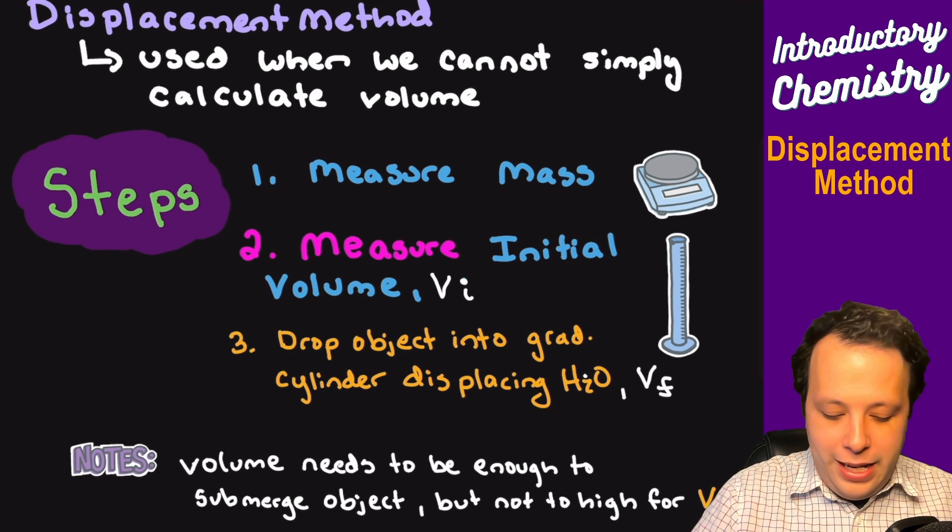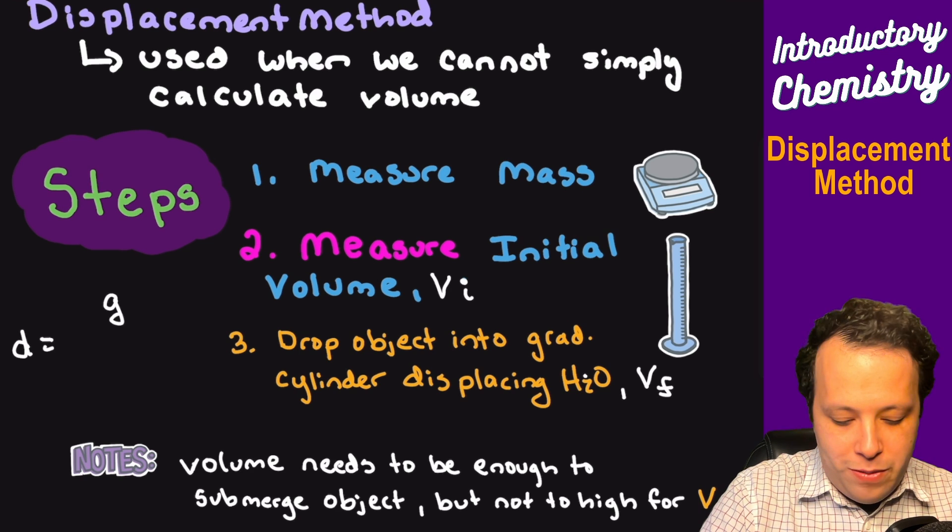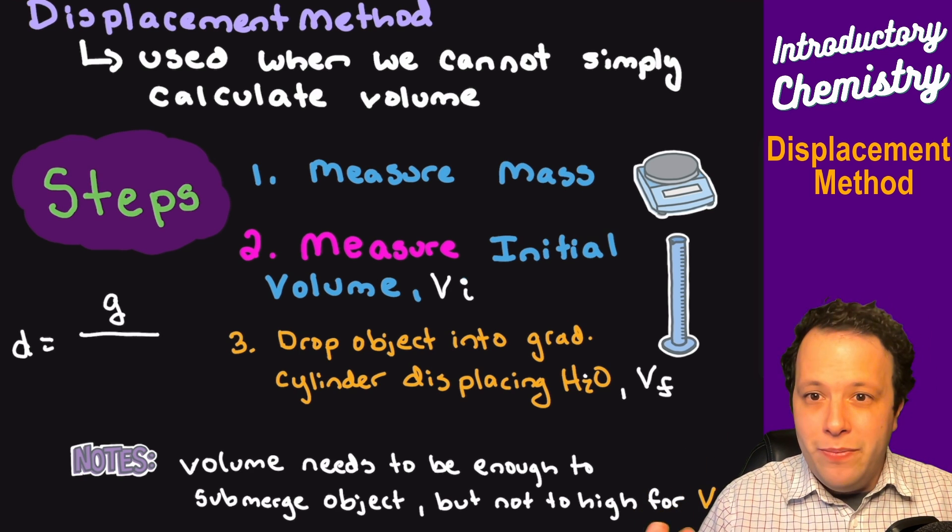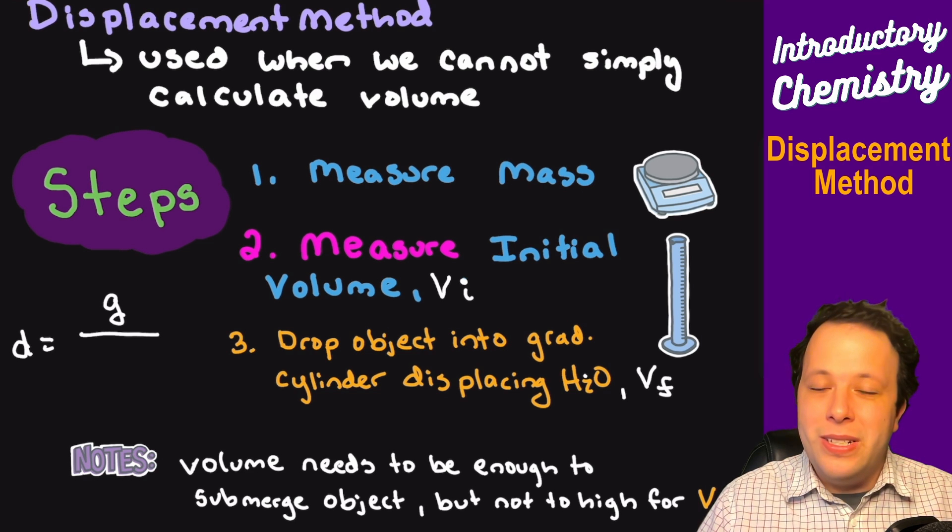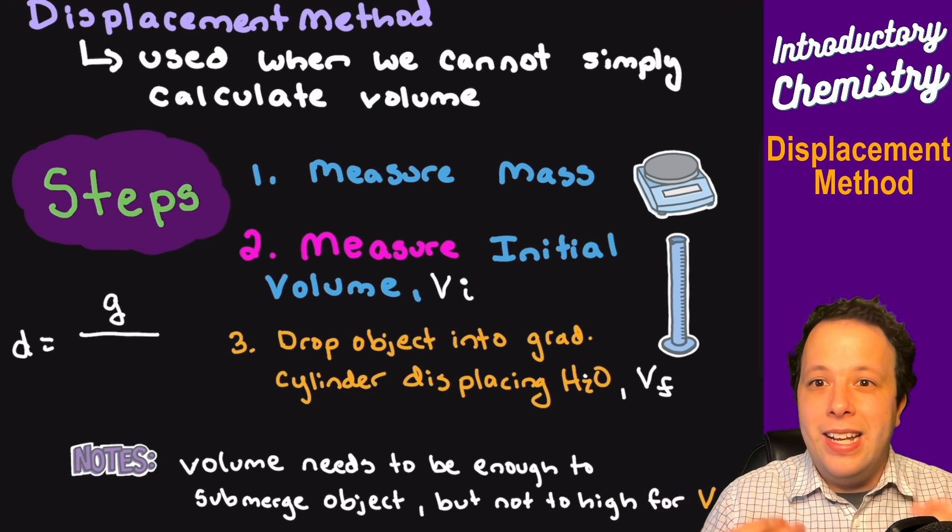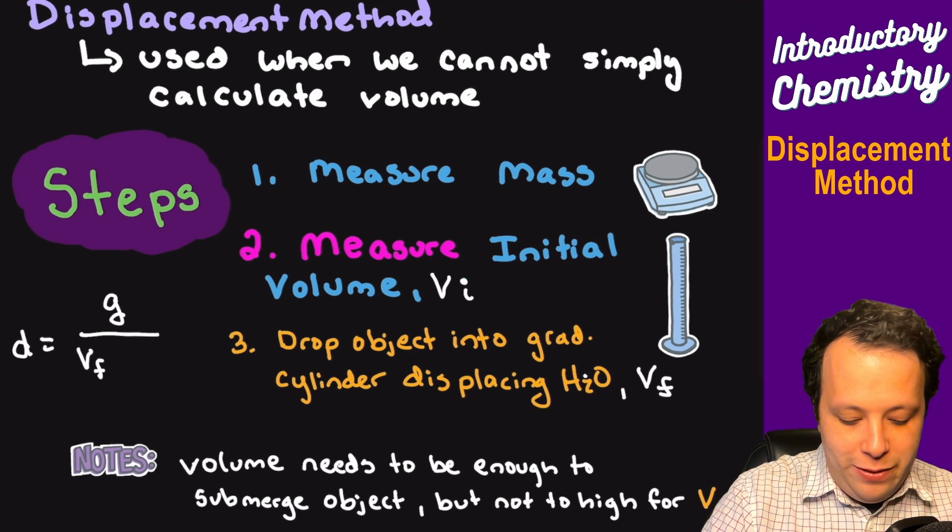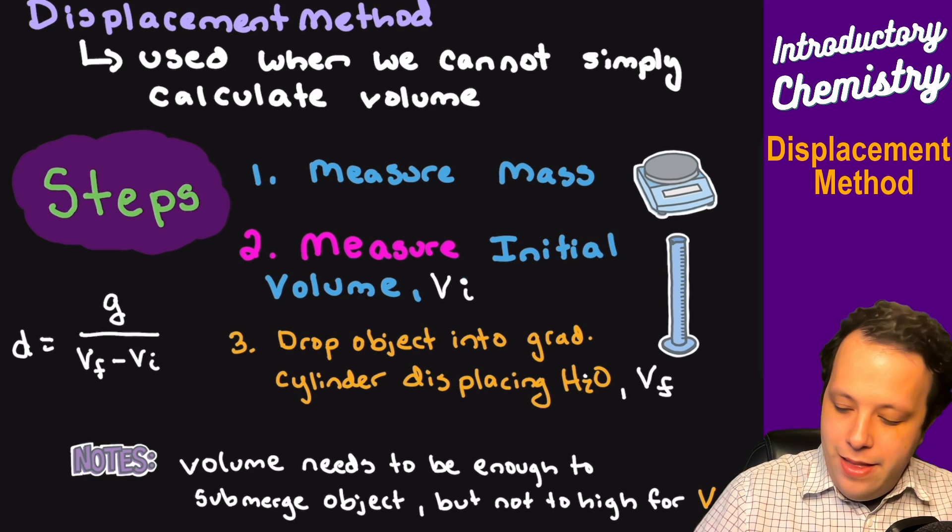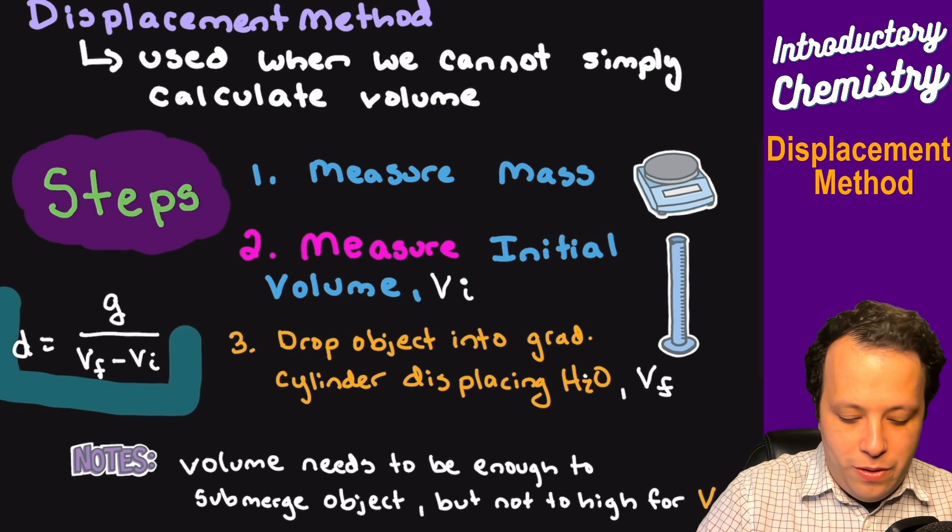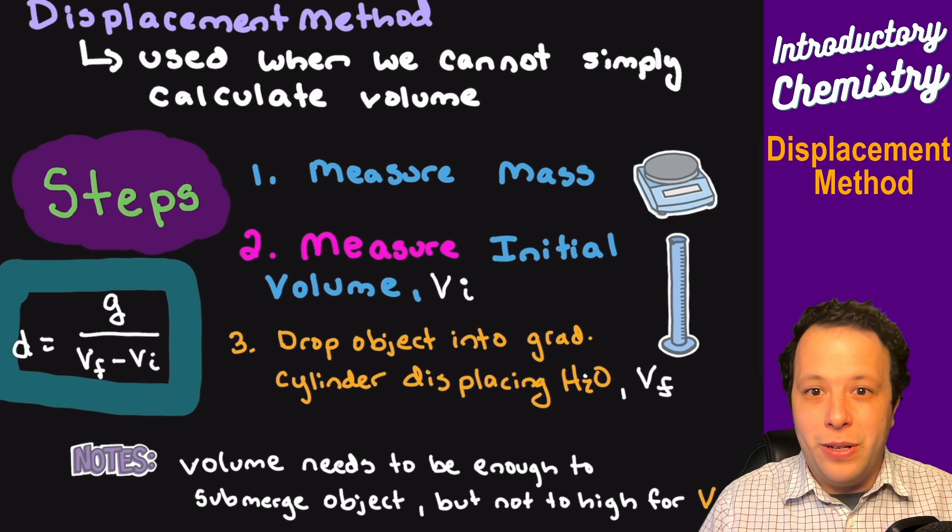So going back to thinking about this, if I have density we're going to have our grams or mass on top. We're going to first measure the volume, and then put the object in, drop it in there and get a final volume. We're going to measure both. So it's going to be final minus initial volume, and that is how we're going to get our density for this particular problem. This is going to be our formula that we're going to use.